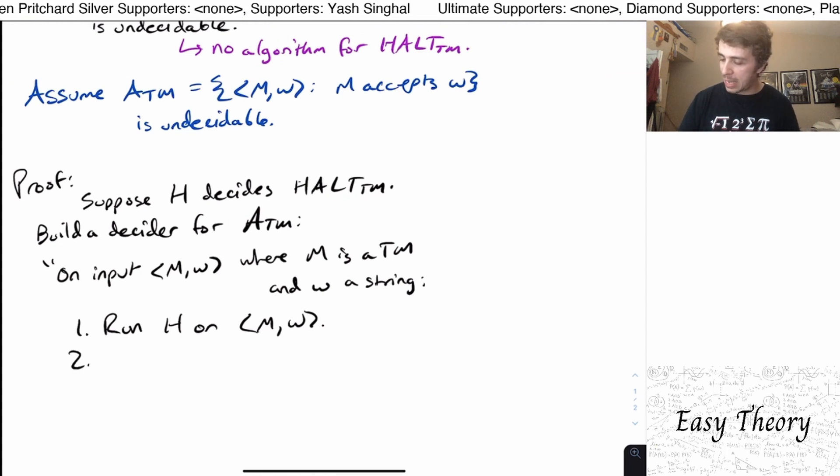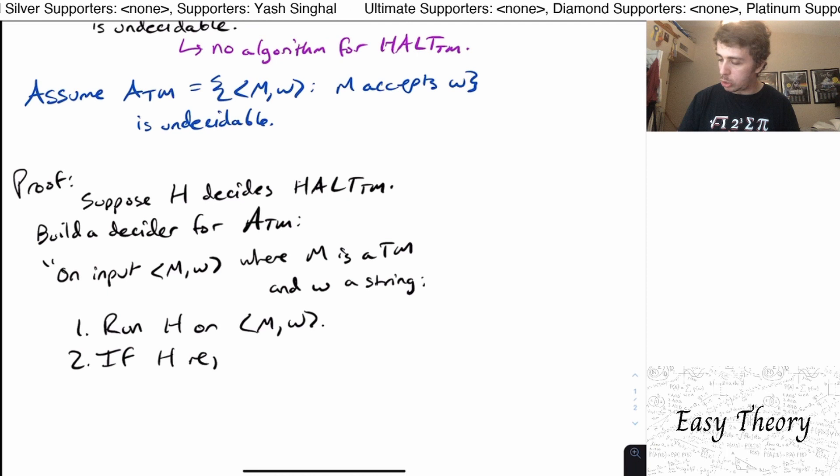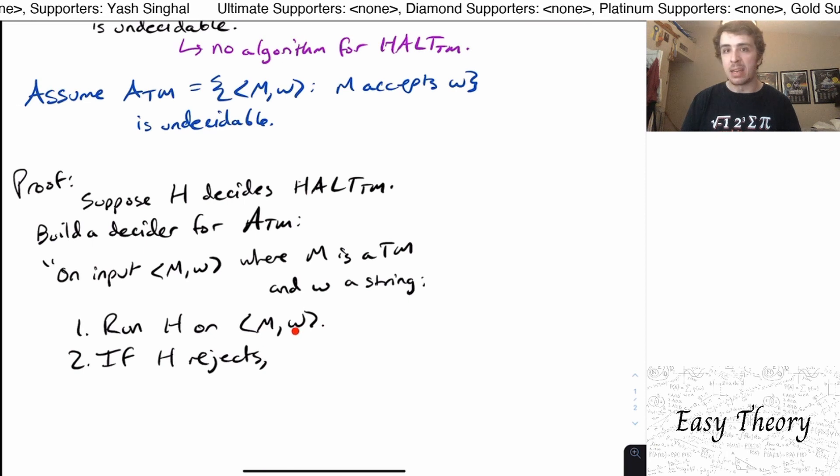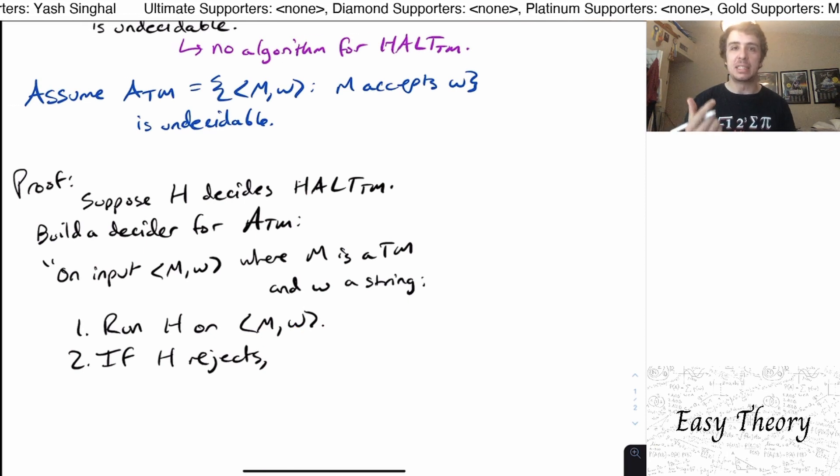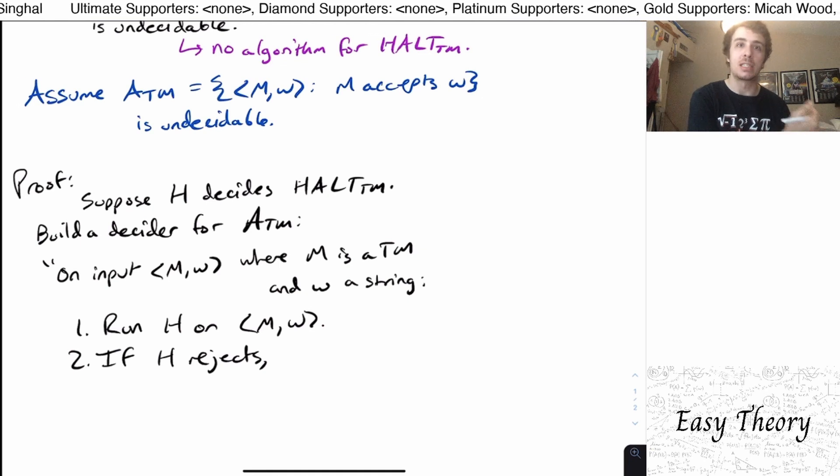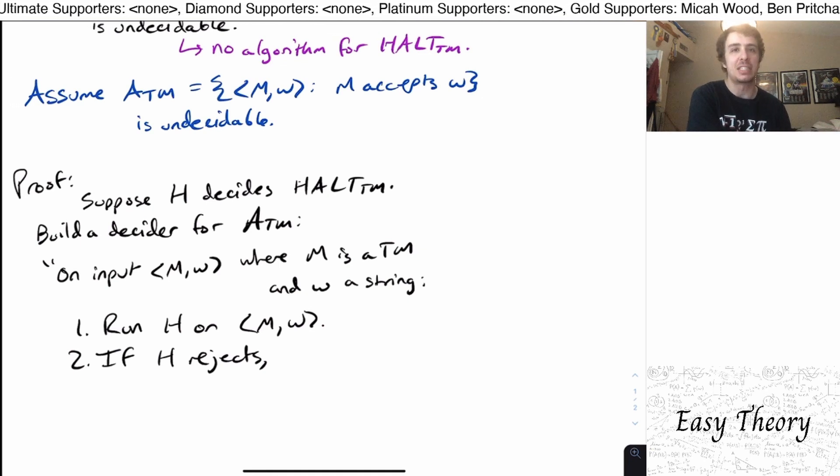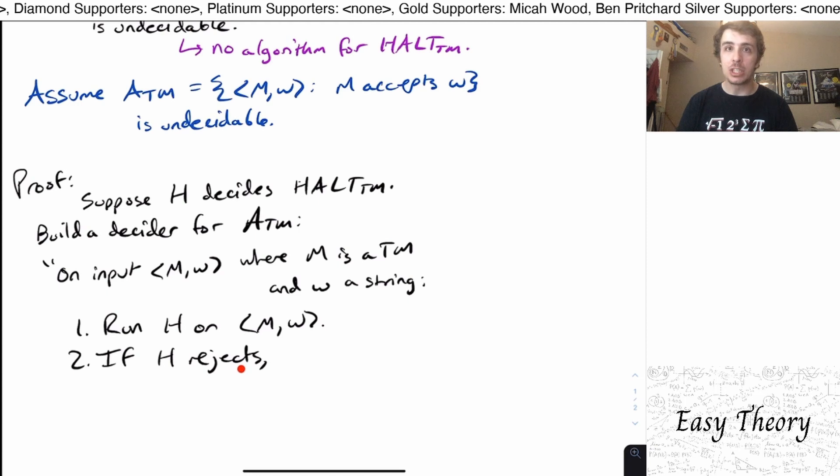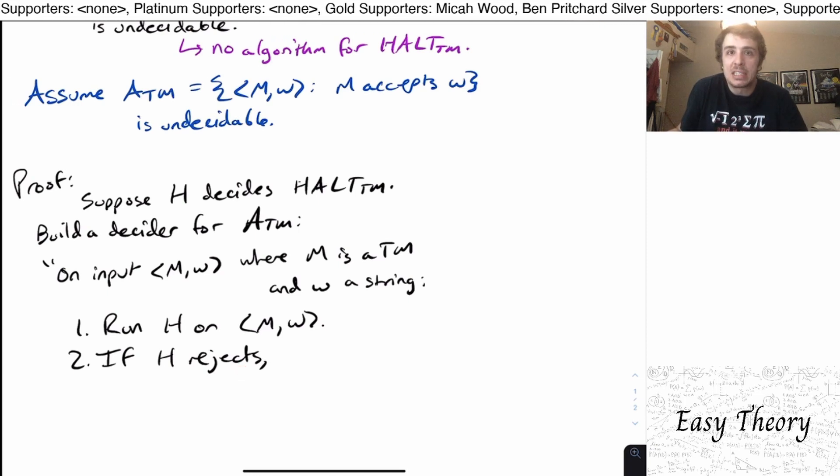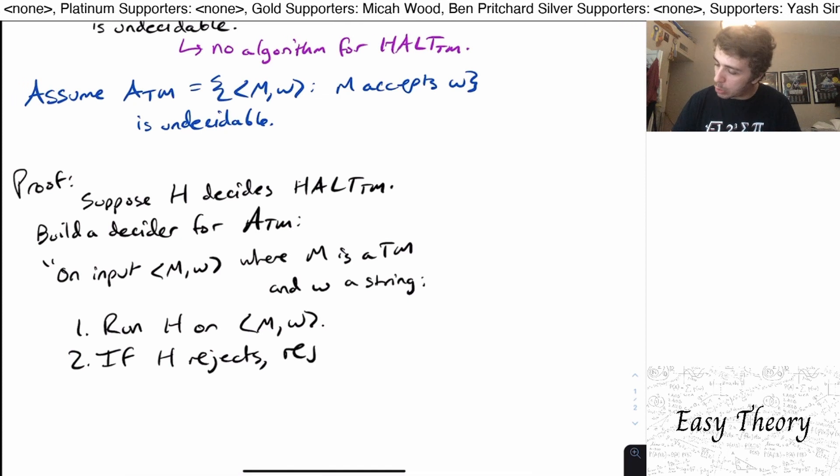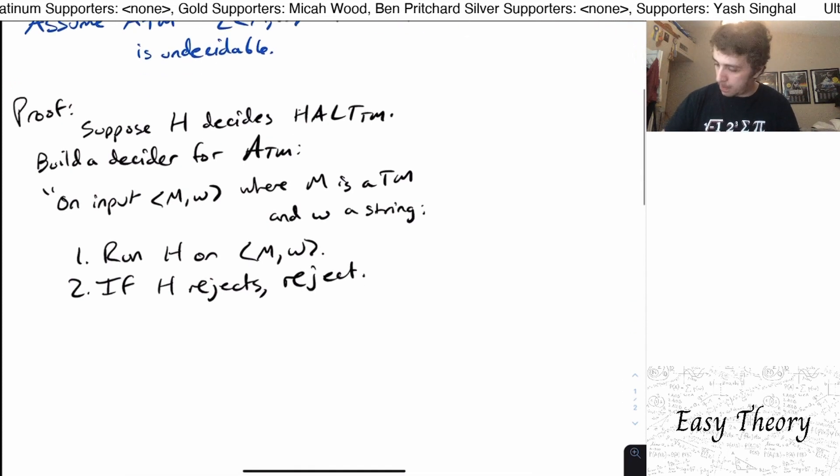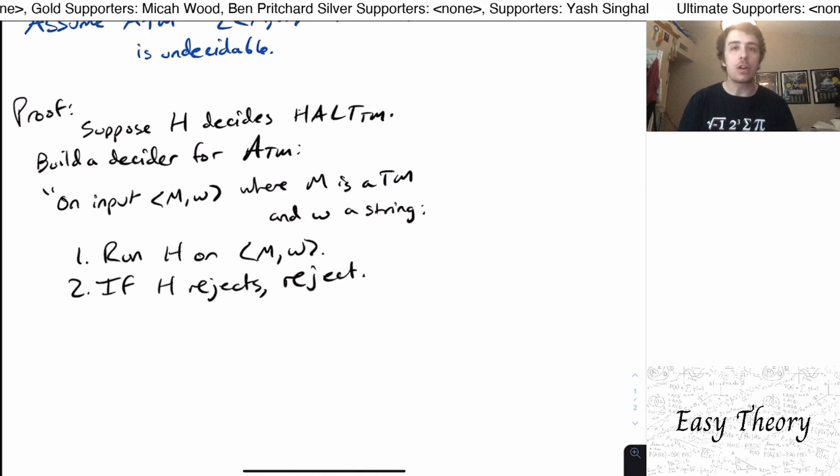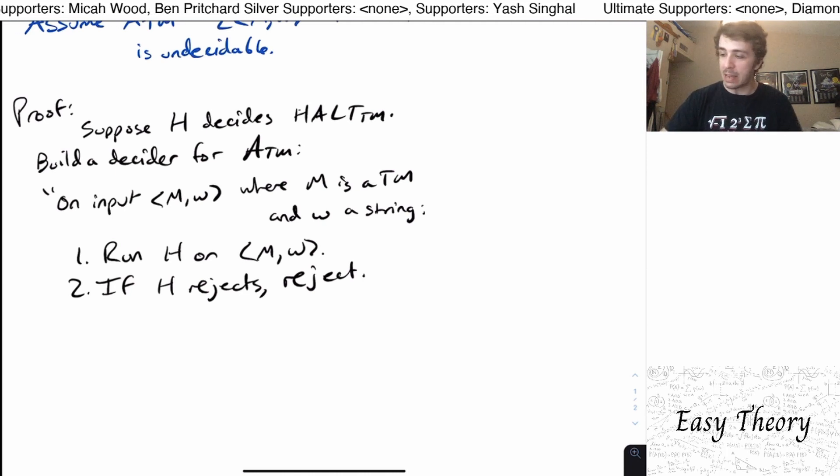So let's suppose that H rejects. So if H rejects, then that says that M does not, will run forever on input W, which implicitly reject W just by running forever. It never accepts W. So for the question of whether M accepts W, if H rejects, M does not stop on input W. So it never accepts in that case. So here we can actually say reject because we want to say accept only when M actually explicitly accepts W. In every other case, we should say reject, even if it runs forever.